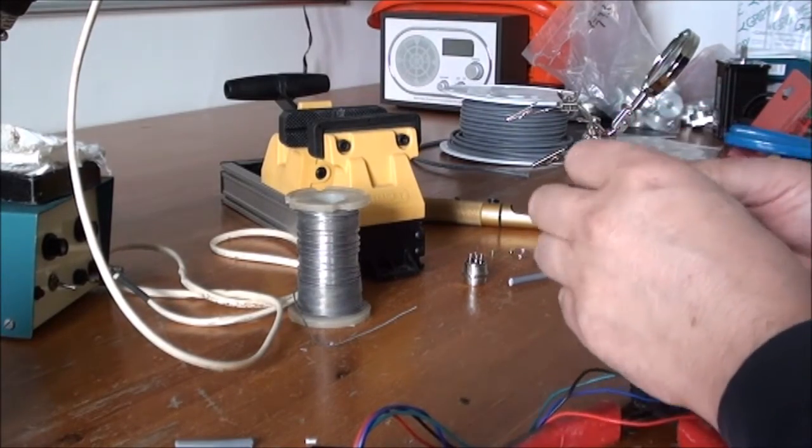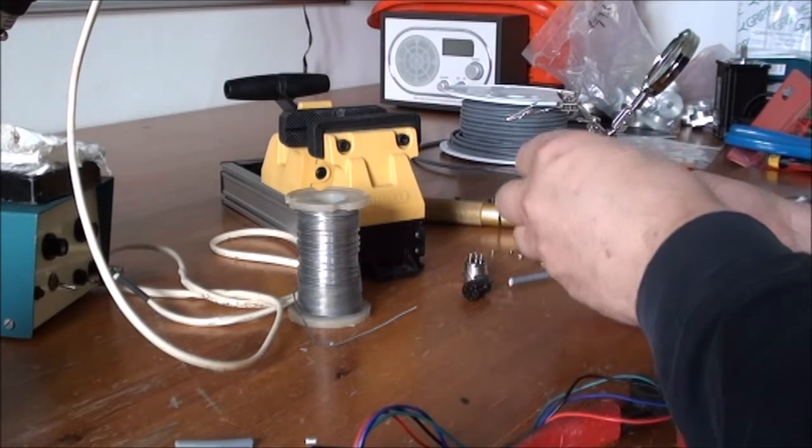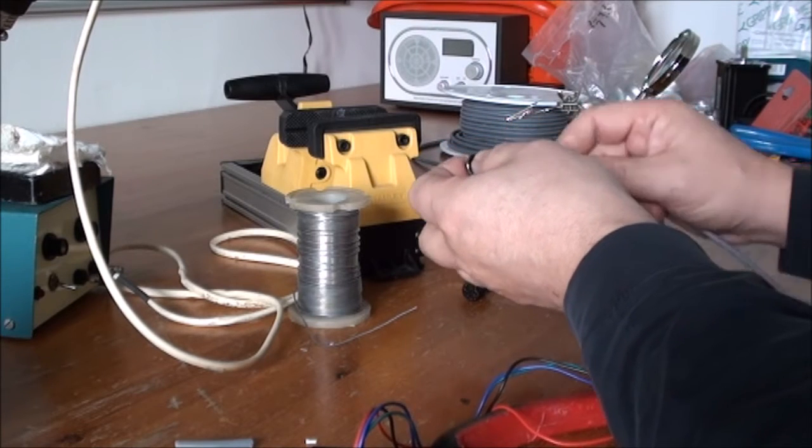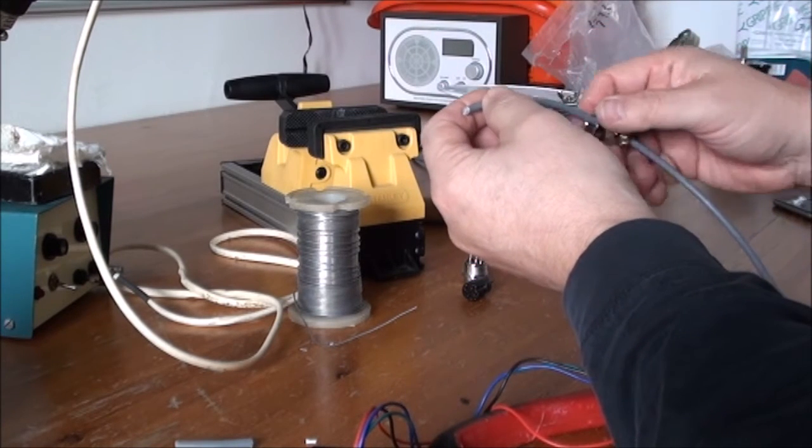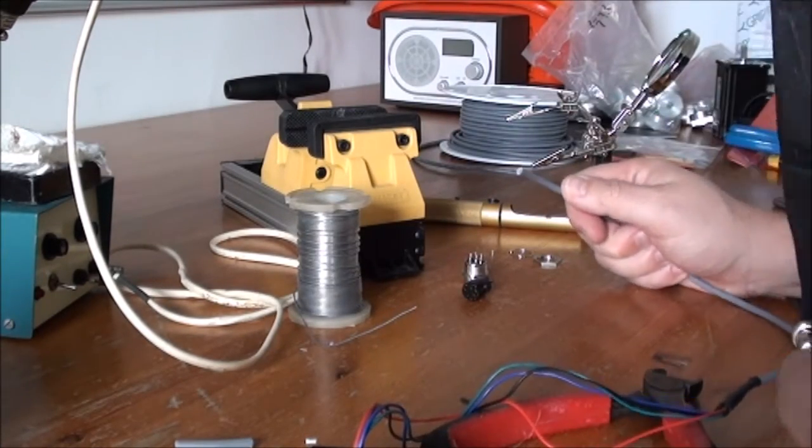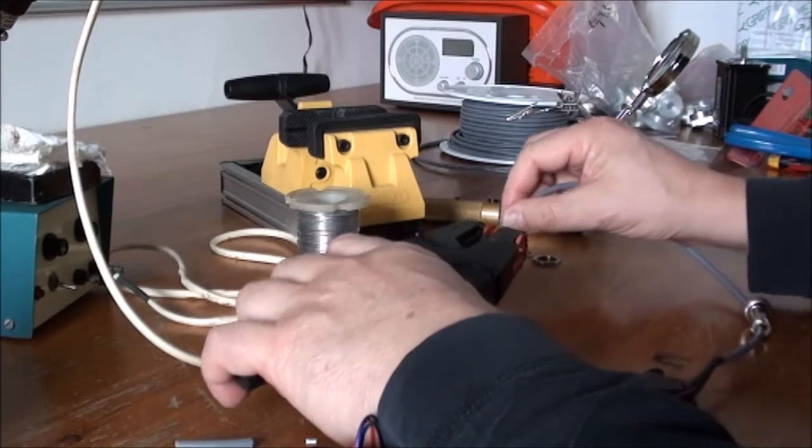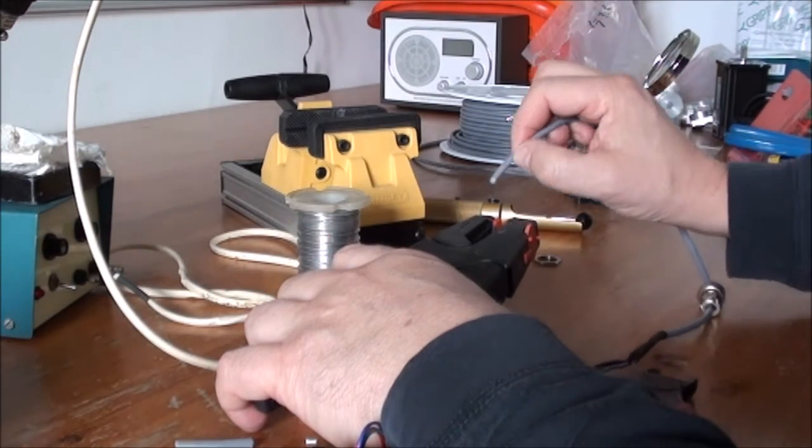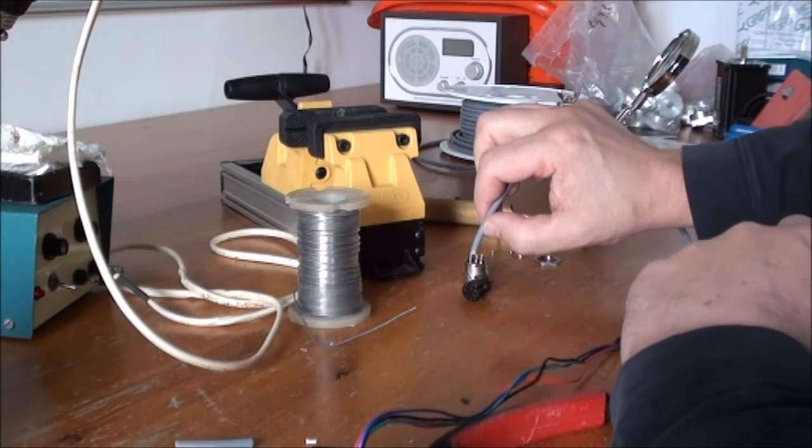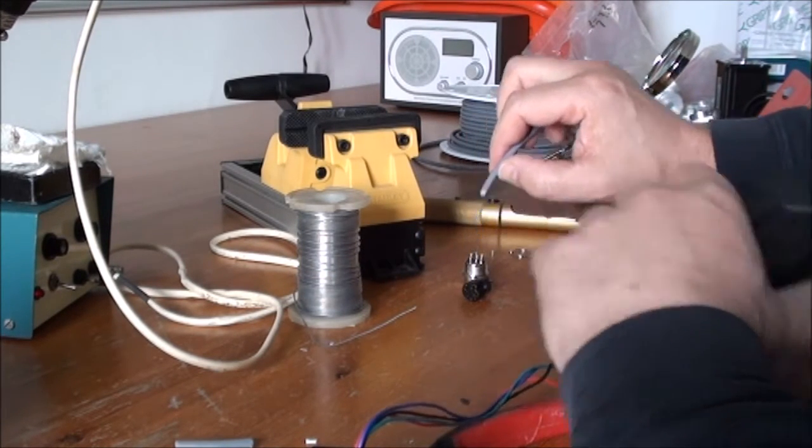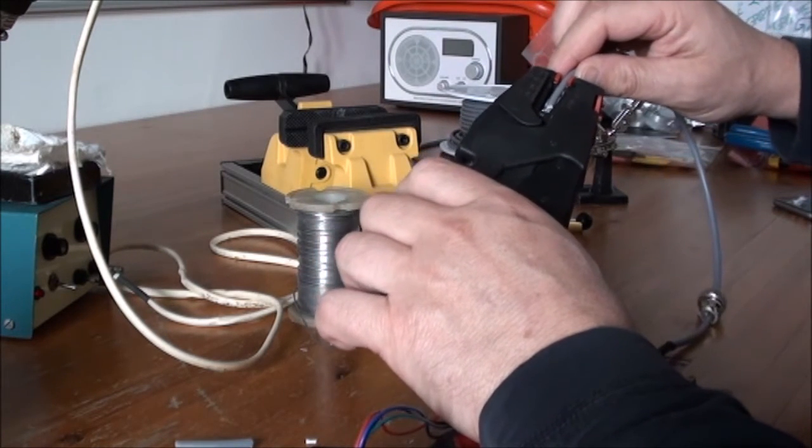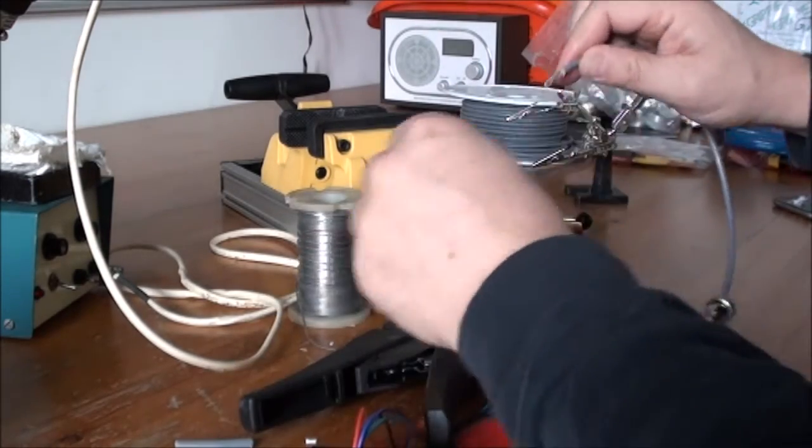So the first thing is of course to disassemble the connector, and remember to put the housing on the wire before you start. This is a classical one to forget and you will hate yourself when you get to it. Then we need to take the insulation off, enough so that you can make the four connectors but not a lot more than necessary. I think for this one I'll just take one and a half centimeters.